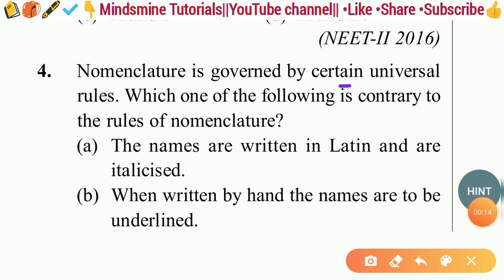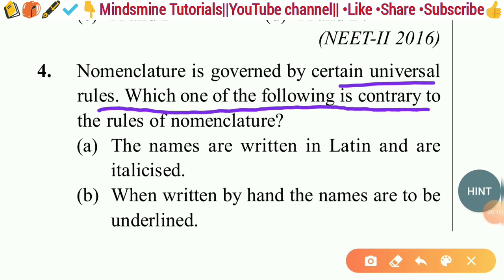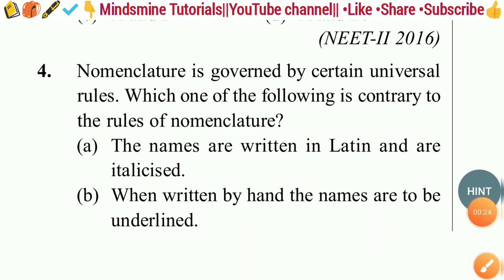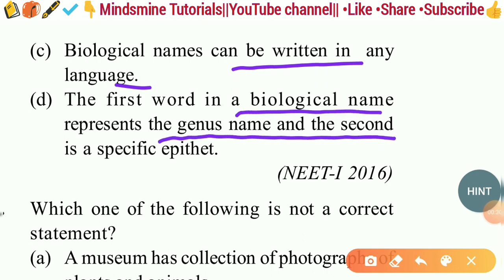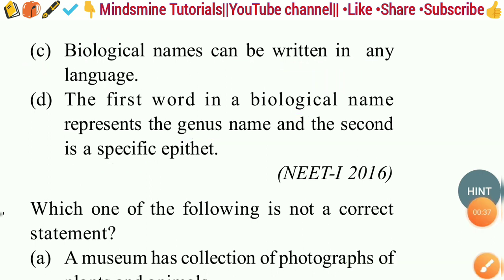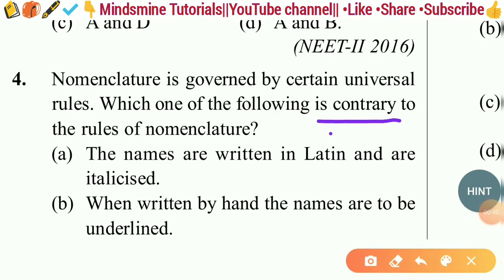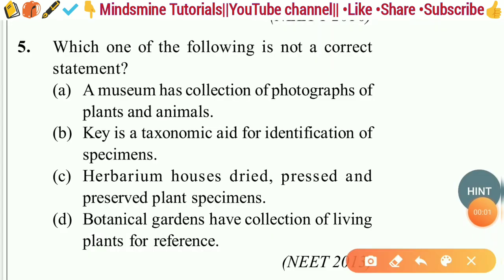Question four: Nomenclature is governed by certain universal rules. Which one of the following is contrary to the rules? Options include: names written in Latin and italicized; when written by hand the names are underlined; biological names can be written in any language; or the first word represents genus and the second is the specific epithet. We were asked for the contrary statement, and the right answer is option C — biological names can be written in any language — which goes against the rules of nomenclature.